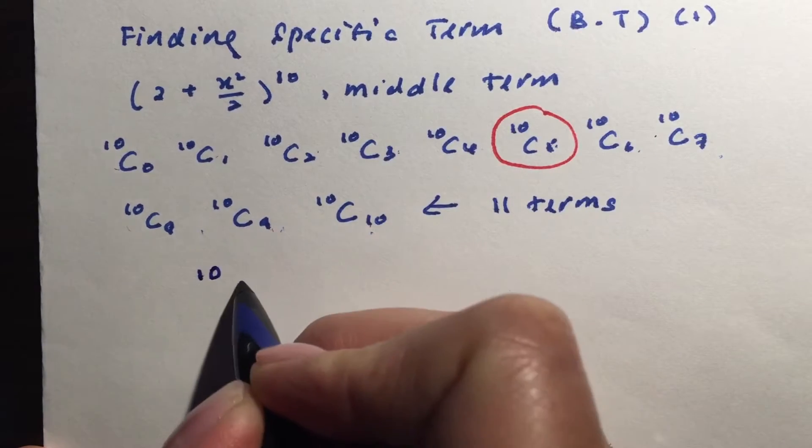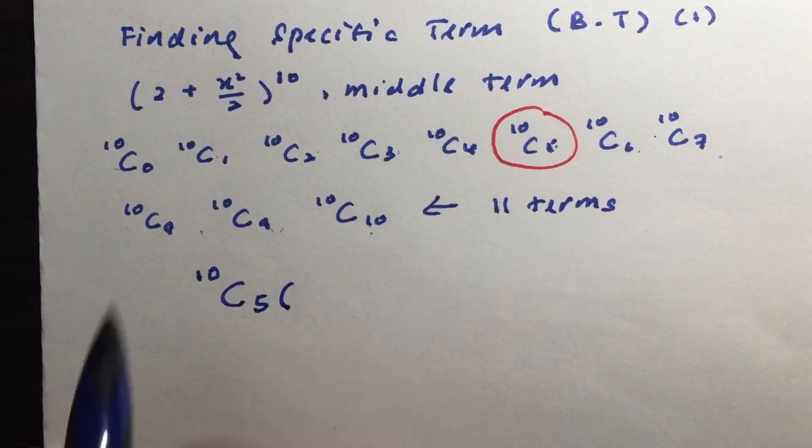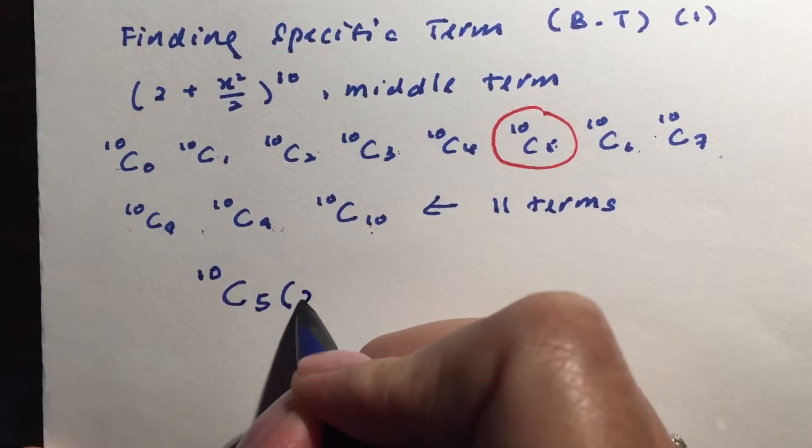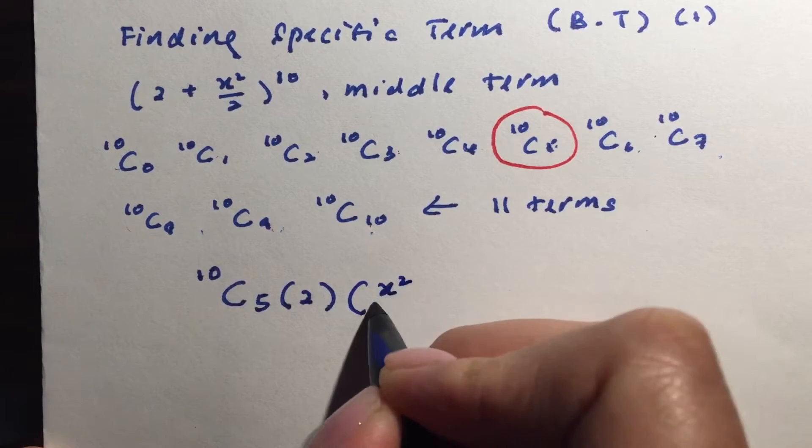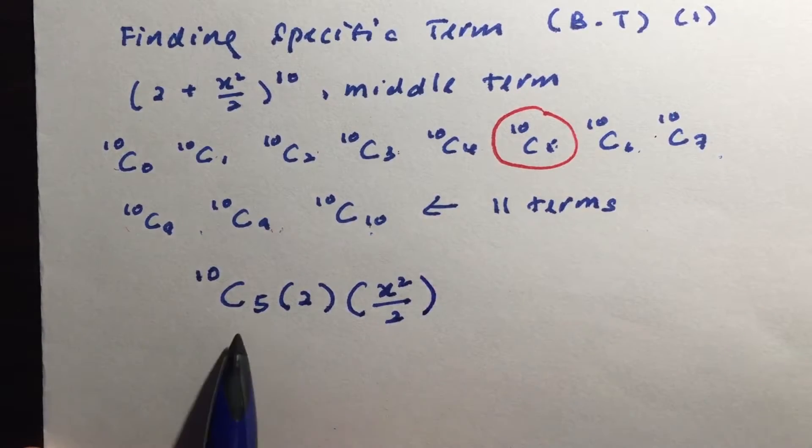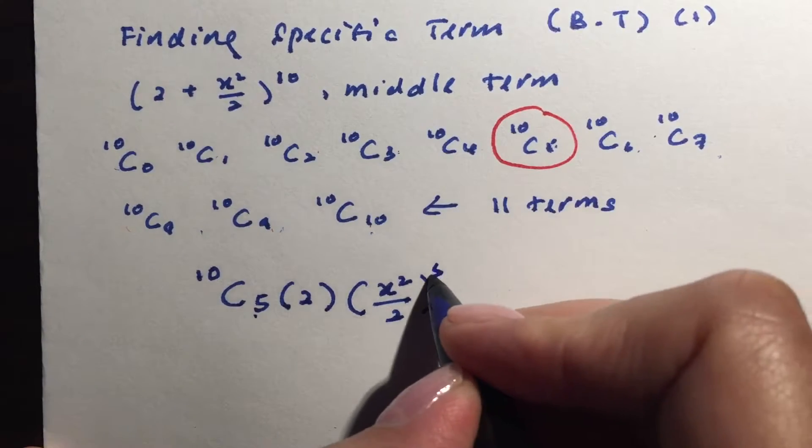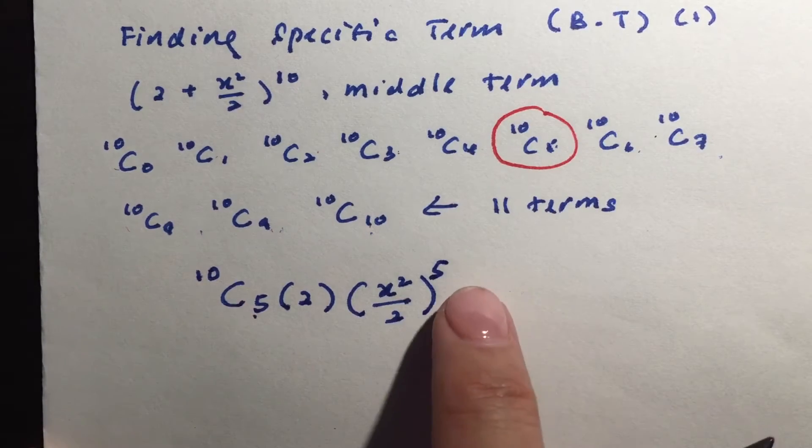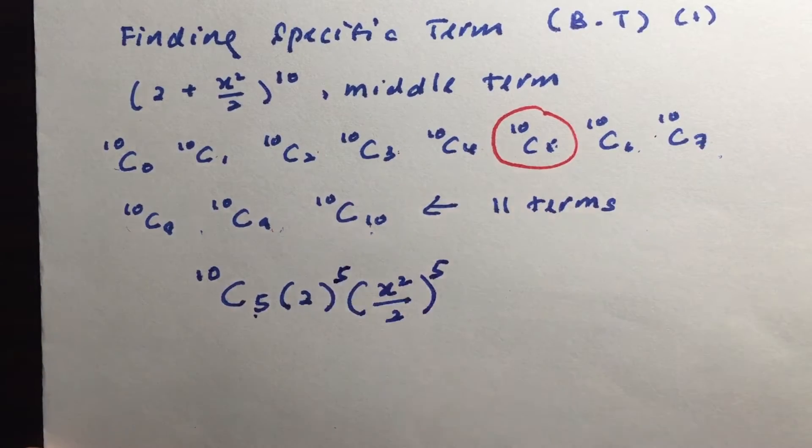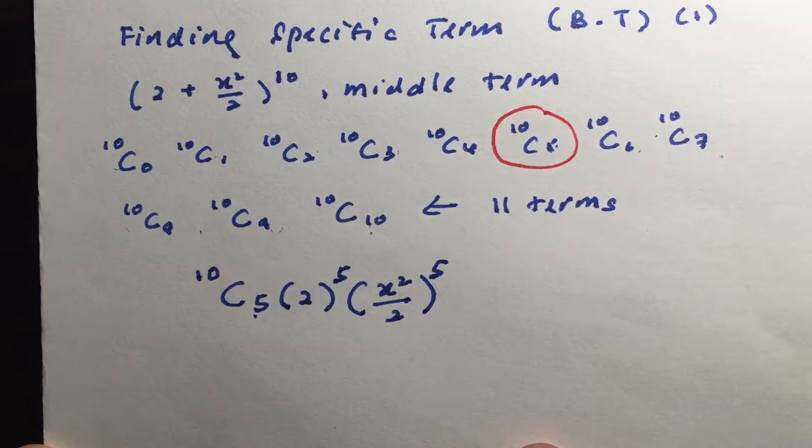So we know that it's going to be 10 choose 5. So what goes into the first bracket? The first term, which is 2. What goes into the second one? x squared over 2. And since this is 5, I will know that this is 5 as well. And since my maximum is 10, 10 minus 5 will give me 5. So this is what we have.